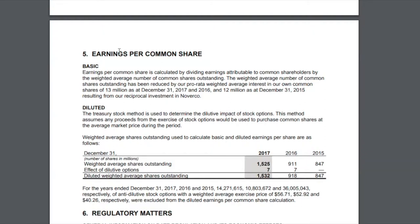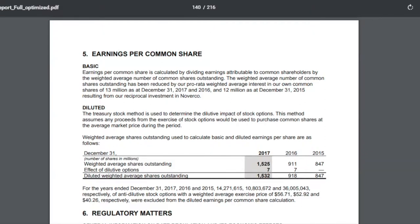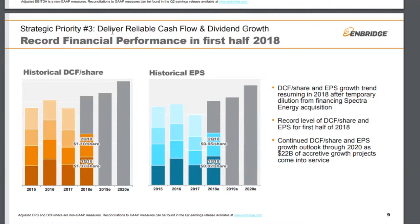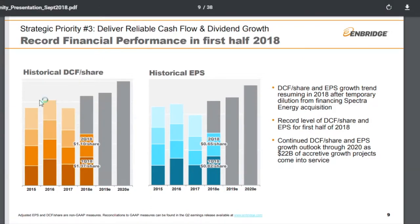Going over to their September investor presentation, they outline historical distributable cash flow per share. As you can see, alongside the Spectra acquisition and the dilution that resulted, distributable cash flow per share actually decreased in 2017.